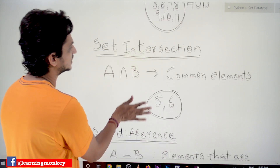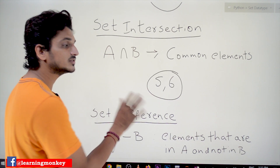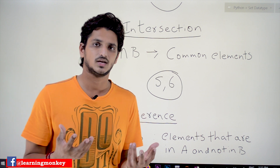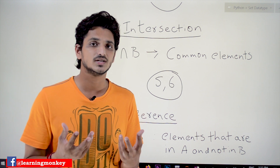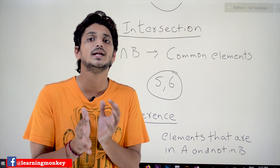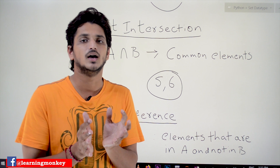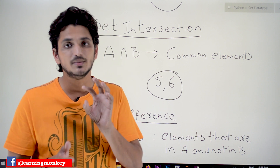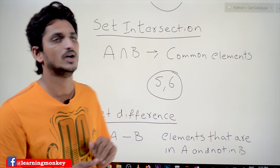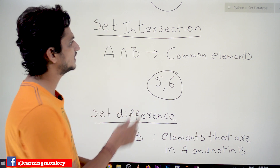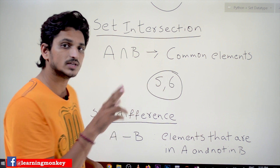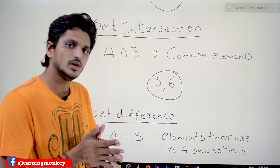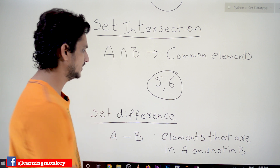Coming to the next concept — set intersection. Intersection means the common elements, the elements that are present in both sets. In our example, 5 and 6 belong to both sets, so a intersection b gives {5, 6}.